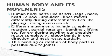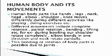Human body and its movements. Human body parts like hands, legs, neck, head, elbow, and shoulder move differently during different activities like playing, doing exercise, etc. Different movements include complete rotation, partial rotation, bending, lifting, etc. For example, during bowling, our shoulders rotate completely, the elbow bends in one direction, and the neck rotates partially. This bending or rotation of body parts is possible due to joints.